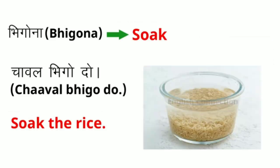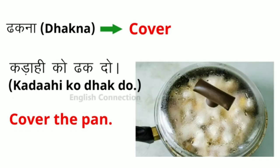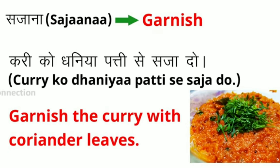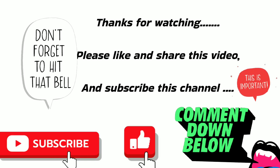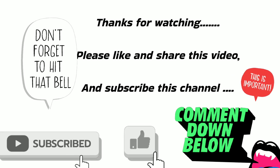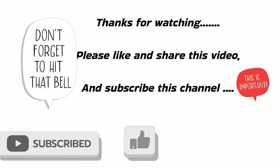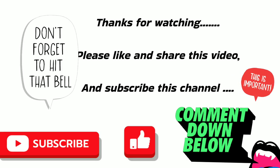The next word is 'soak.' Example: soak the rice. The next word is 'cover.' Example: cover the pan. The last word is 'garnish.' Example: garnish the curry with coriander leaves. Thanks for watching, please like and share this video and subscribe to this channel.